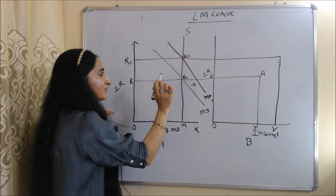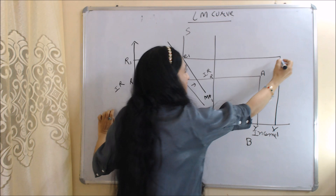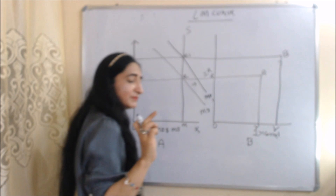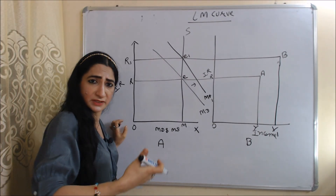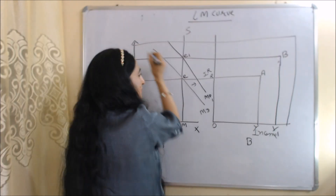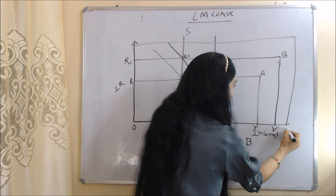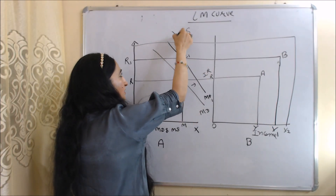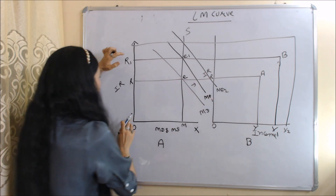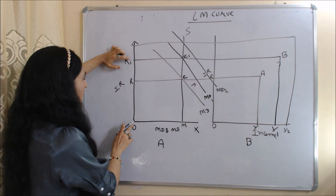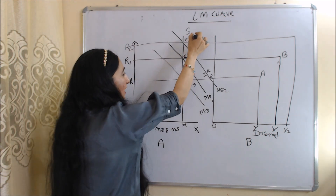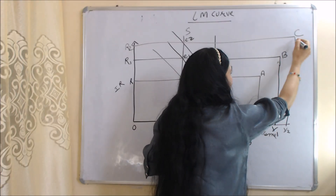E1 is the new equilibrium point in diagram A, and B is the new equilibrium point in diagram B — both showing equilibrium in the money market. Now suppose income increases more from OY1 to OY2. As income increases, money demand also increases — the money demand curve shifts from MD1 to MD2. As money demand increases, interest rate also increases from OR1 to OR2. E2 is the new equilibrium point in diagram A, and C is the new equilibrium point in diagram B.